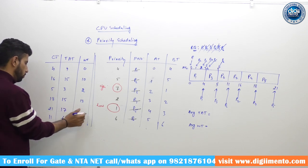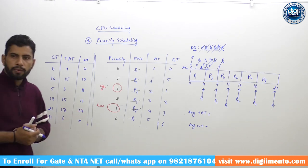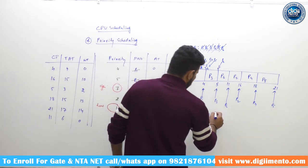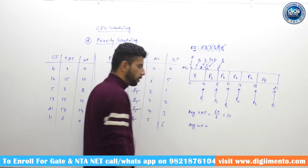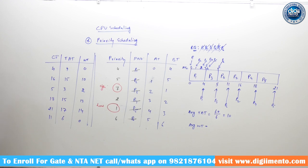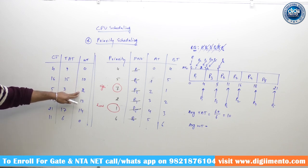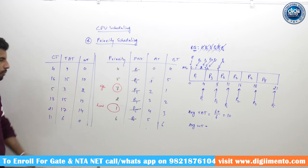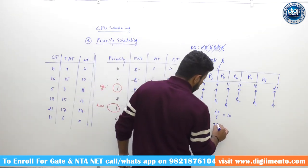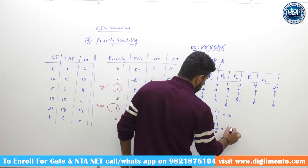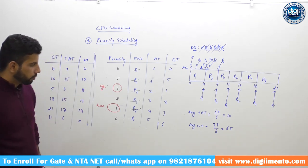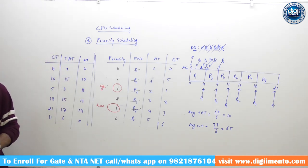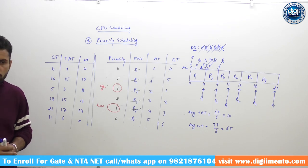Sum of turnaround times: 4+15+3+15+16+6 = 59, approximately 60 by 6. Average turnaround time is 10 units. Sum of waiting times: 0+10+2+13+13+0 = 38, approximately 39 by 6 ≈ 6.5. This is the average waiting time as well as average turnaround time for our processes.